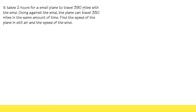It says it takes two hours for a small plane to travel 390 miles with the wind. When we go against the wind, the plane can only travel 330 miles in the same amount of time. We are going to find the speed of the plane and the speed of the wind. We have two unknowns, which is a big hint that we should use the system of equations.